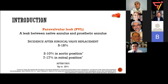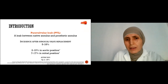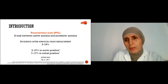Paravalvular leaks are leaks between the annulus — the native annulus of the valve and the prosthetic annulus. That's the definition. It's a frequent entity; its incidence is between 5 and 18 percent after surgical valve replacement.